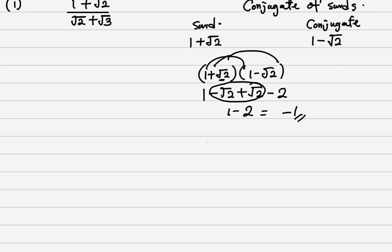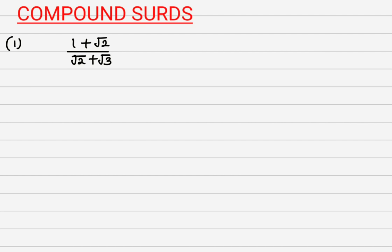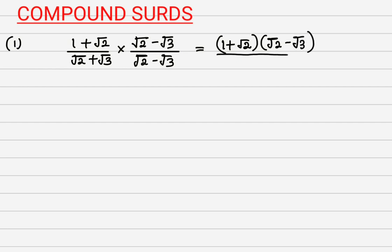So the conjugate of the denominator (root 2 plus root 3) is (root 2 minus root 3). We multiply both numerator and denominator by (root 2 minus root 3) over (root 2 minus root 3). This gives (1 plus root 2)(root 2 minus root 3) all over (root 2 plus root 3)(root 2 minus root 3).